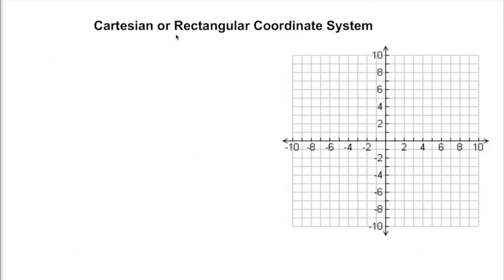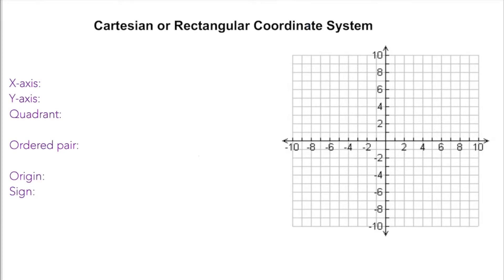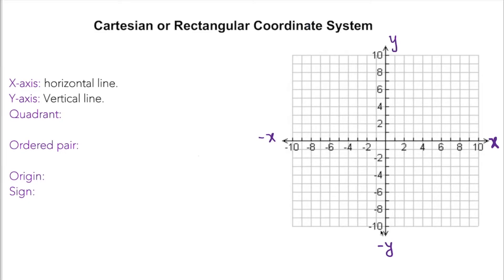Let's go over some terminology, then we're going to plot some points in the Cartesian coordinate system. Here is a different graph where each grid is labeled — like 1, 2, or I can represent as 2, 4, 6. So recalling what we know: x-axis is the horizontal line going left and right. I can label it — this is x-axis. This is y-axis going up and down vertically.